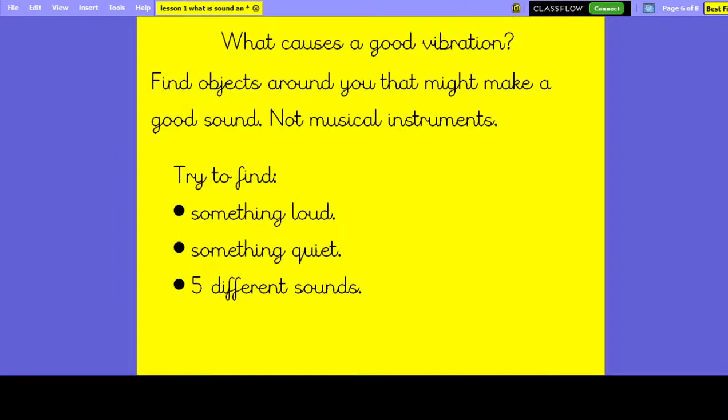So what causes a good vibration? What you're going to do now is you're going to find objects around you, so somewhere around your house, that might make a good sound. Not a musical instrument, because we already know that musical instruments can make a good sound. But we're thinking about how other sounds can travel through the air. So in a moment, you're going to pause this, and I want you to try to find something that makes a loud sound, something that makes a quiet sound. And I want you to find five different sounds all together. So the loud and quiet, that's two of them.